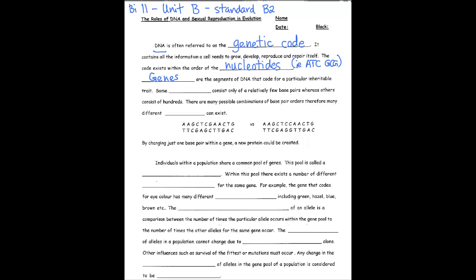Genes are the segments or pieces of DNA that code for a particular inheritable trait. Some genes consist of only a relatively few base pairs, whereas others consist of hundreds of base pairs.